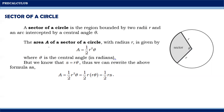To determine the area of the sector, represented by A, we can use the formula: A equals one-half times r squared times the given theta, or the central angle in radian measure. Remember that the central angle theta should always be in radian measure before using this formula. In the previous video we know that arc length s is equal to the product of r and theta.